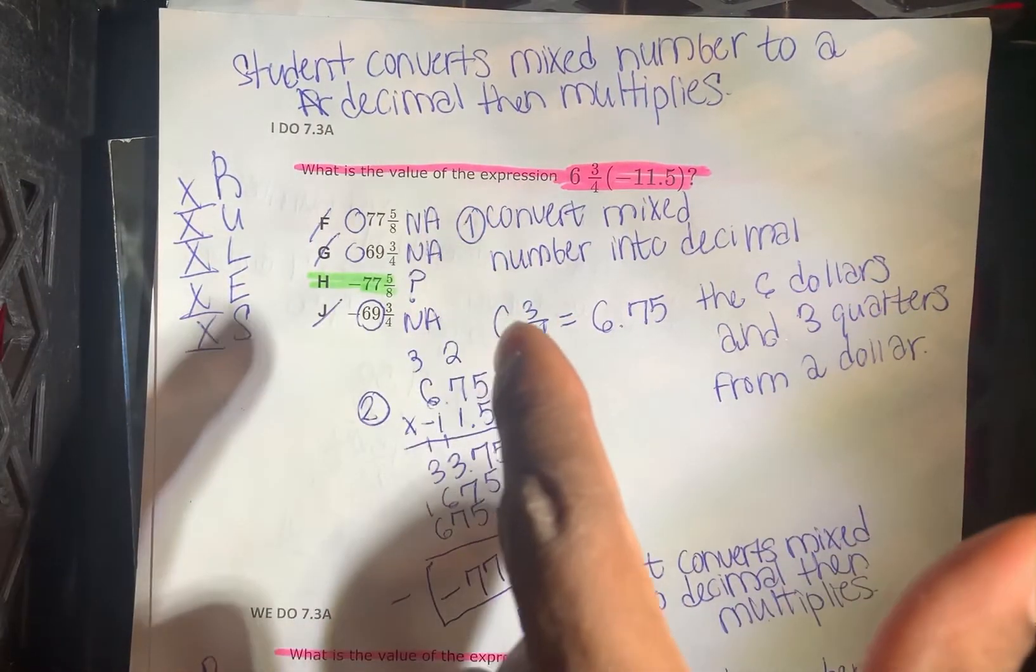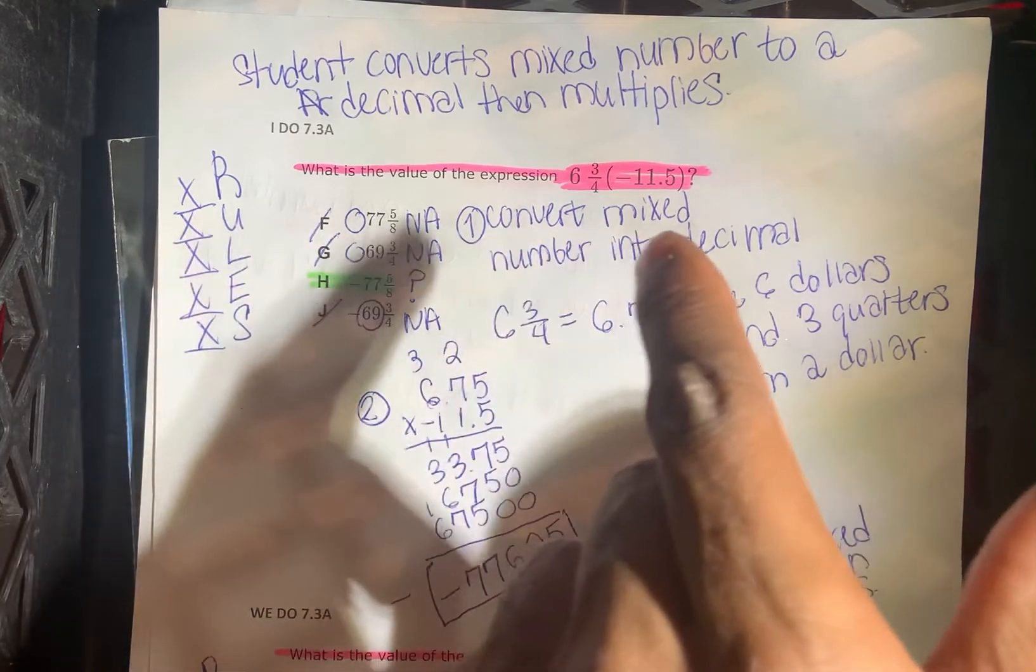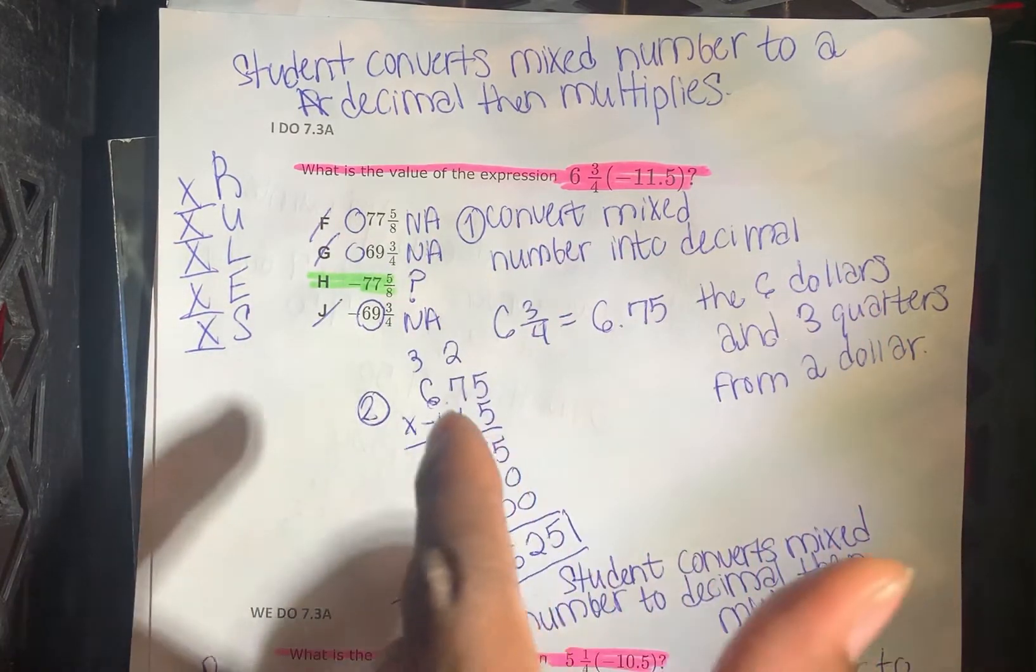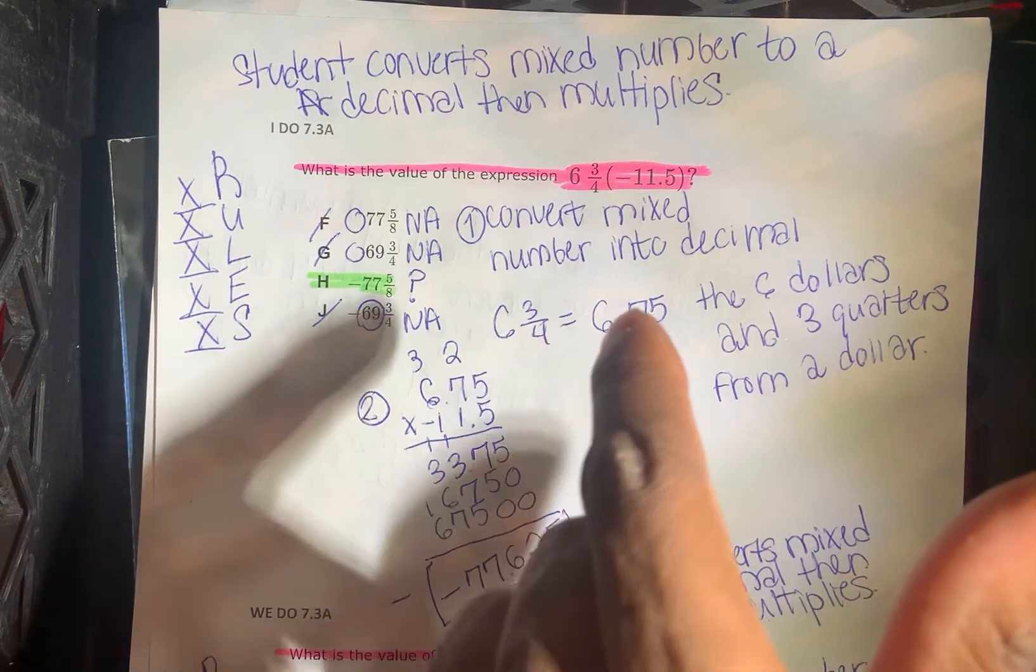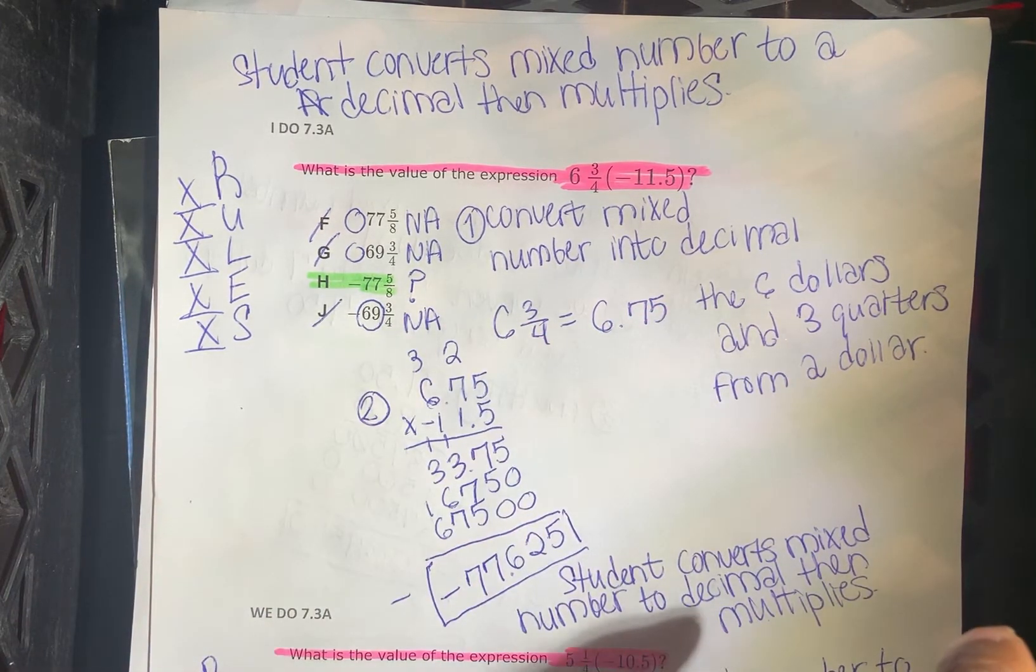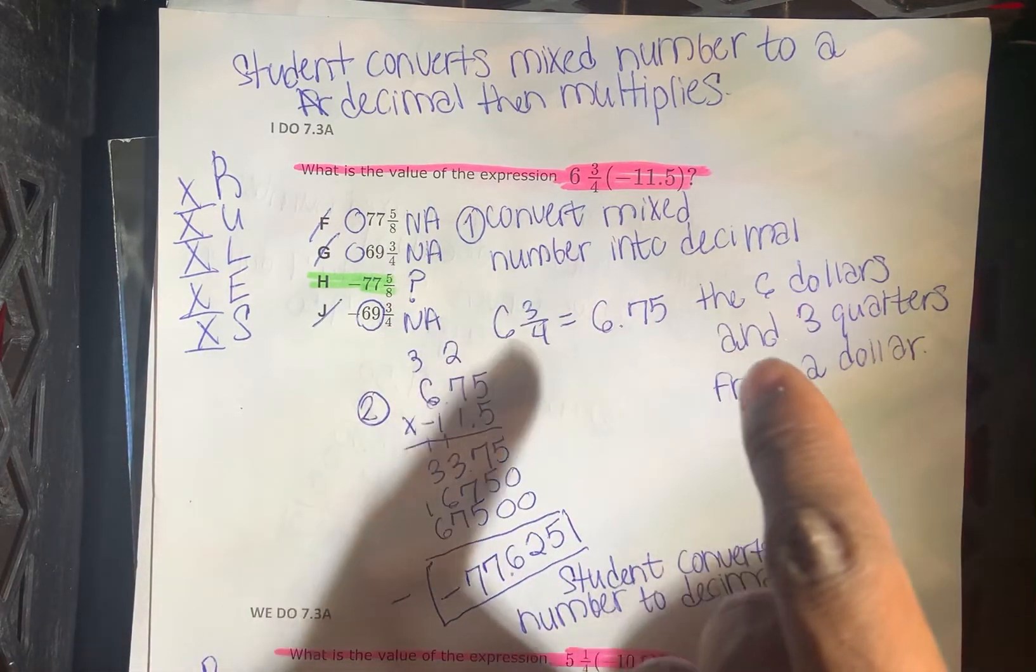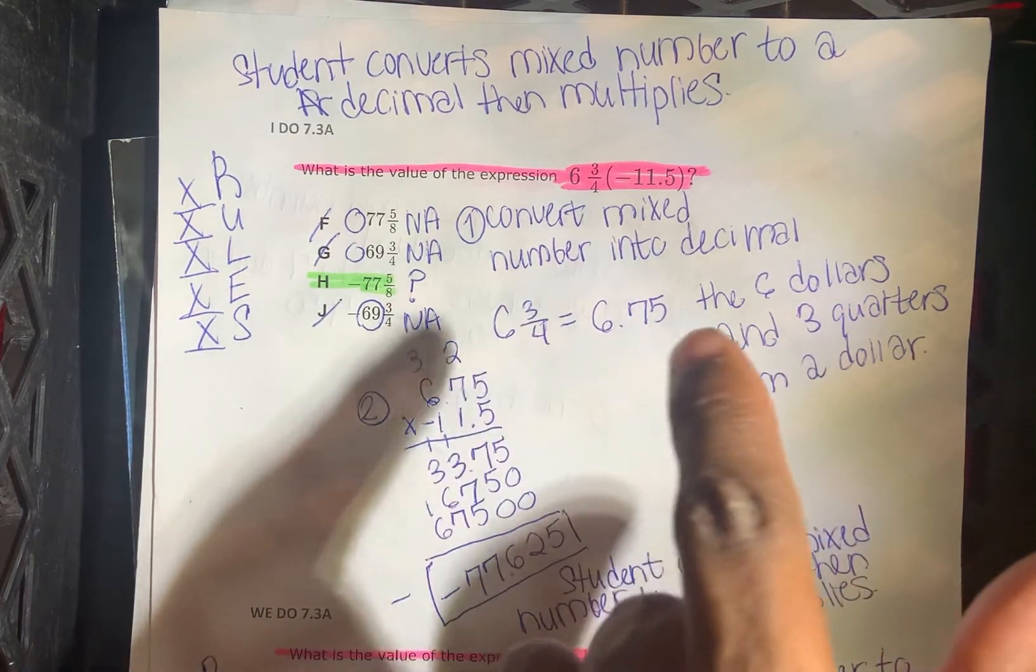So the first step, I convert the mixed number into a decimal. So if I see 6 and 3 quarters, I'm thinking money. I'm thinking $6.75 from a dollar.